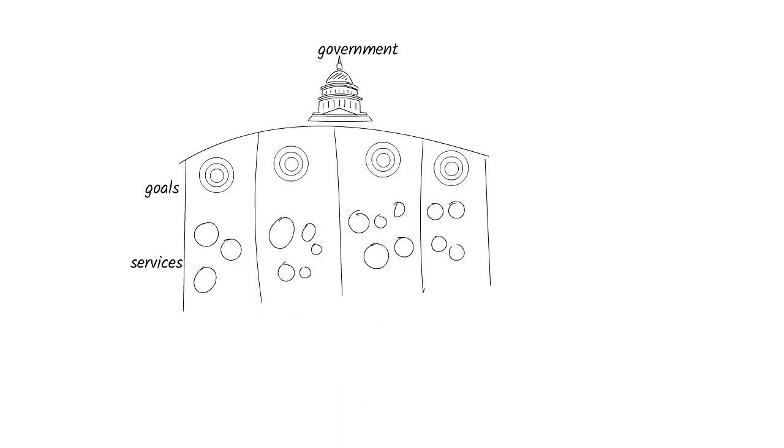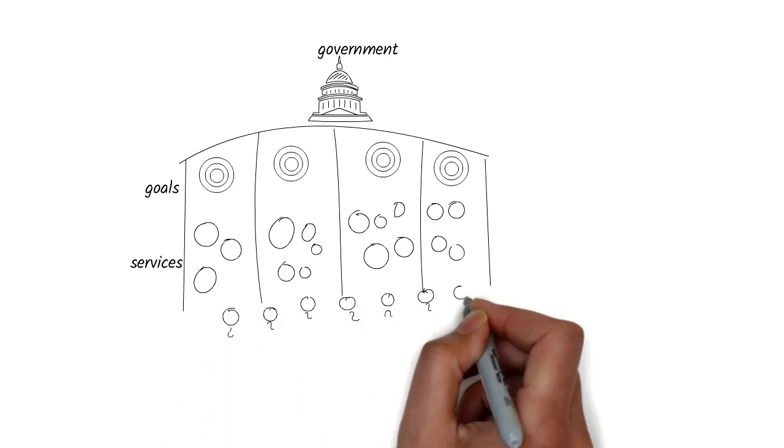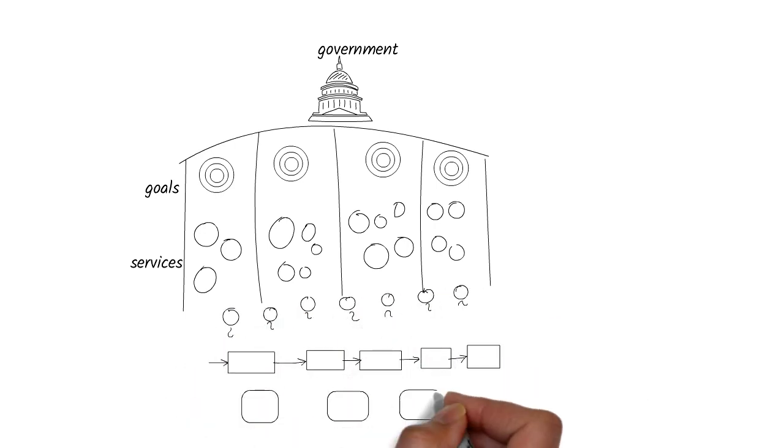Each department offers a wide range of services to its citizens. These services change frequently as laws and regulations change. These services are delivered through people, processes, and systems to its citizens.